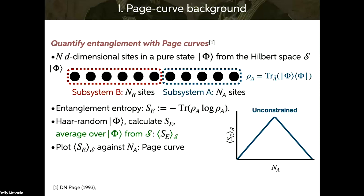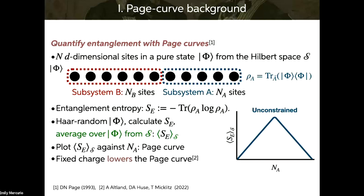This is the unconstrained page curve — I'm drawing states from a Hilbert space with no restrictions. What we can do is fix a charge, so now the states from the Hilbert space have, say, particle number 10. This will lower the page curve. An intuition for that is you're decreasing the dimension of your Hilbert space when you add this constraint, thus decreasing the maximum possible value of the entanglement entropy.